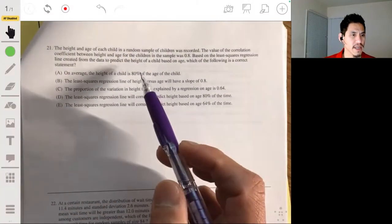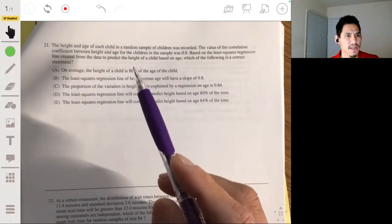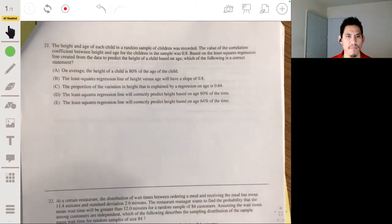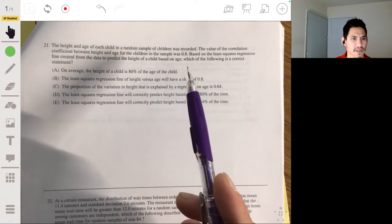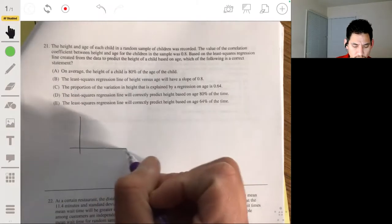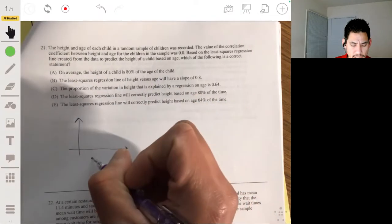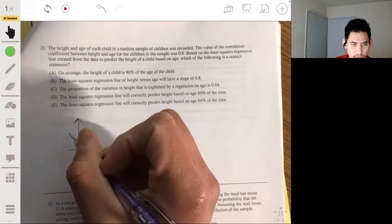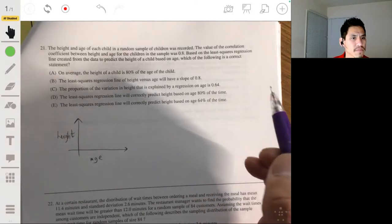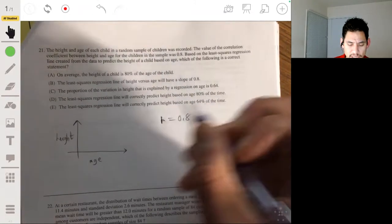Number 21, the height and age of each child in a random sample of children was recorded. The value of the correlation coefficient between height and age for the children in the sample was 0.8, based on the least squares regression line created from the data to predict the height of a child based on age, which is the following is a correct statement. So we're looking at two quantitative variables, where you got age as an explanatory variable used to predict height. And correlation coefficient, the R value is 0.8. So there's a positive correlation.